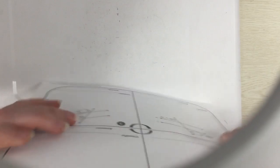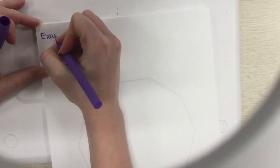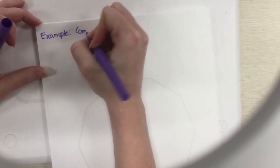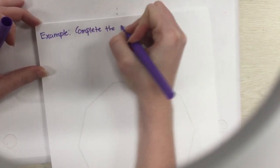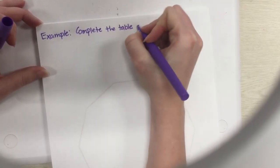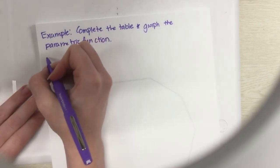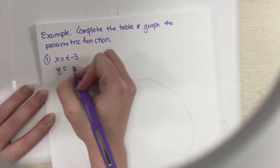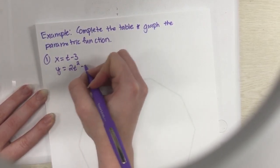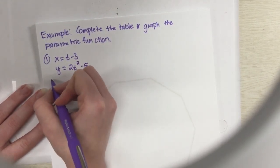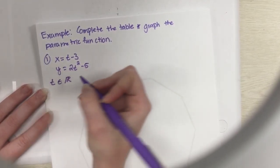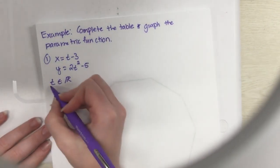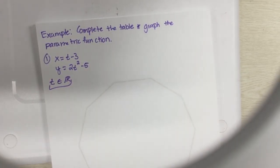Alright, so our first example will be doing a table and a graph. We will complete the table and graph the parametric function. The first one I have is x equals t minus 3 and y equals 2t squared minus 5.